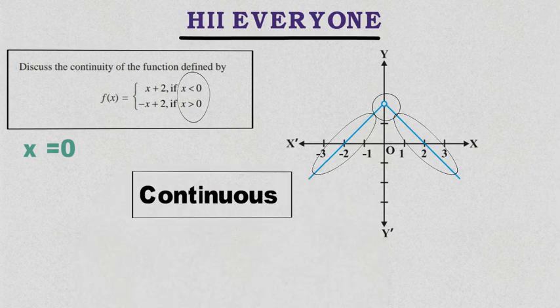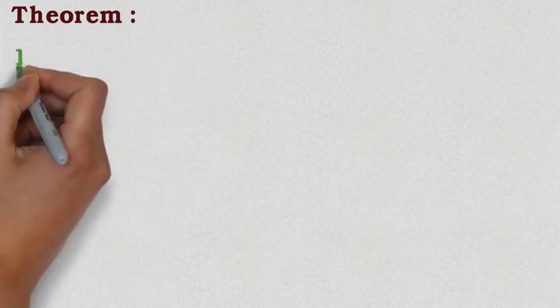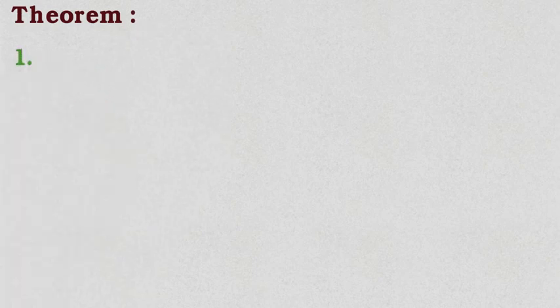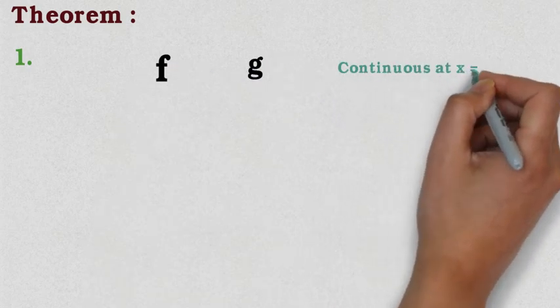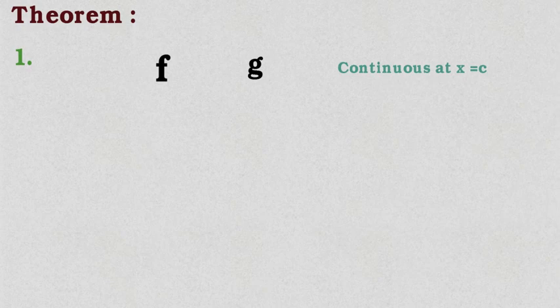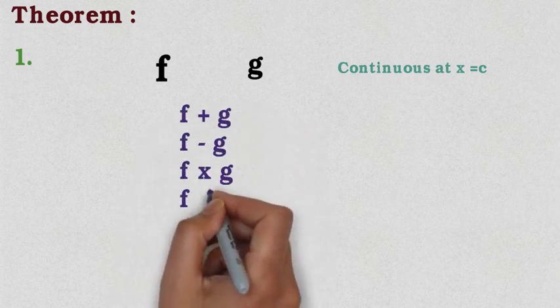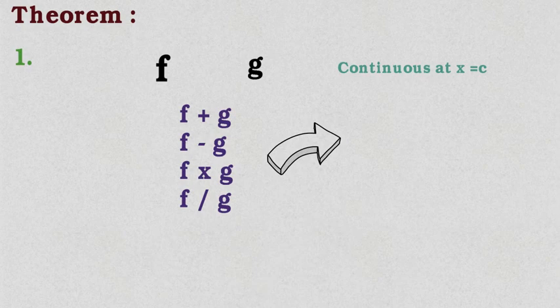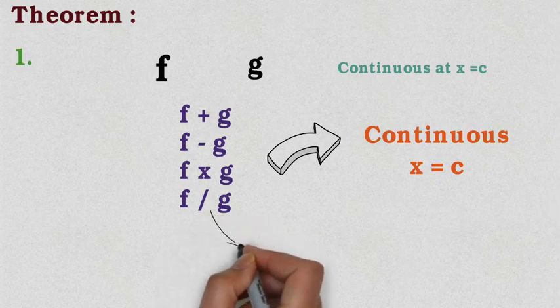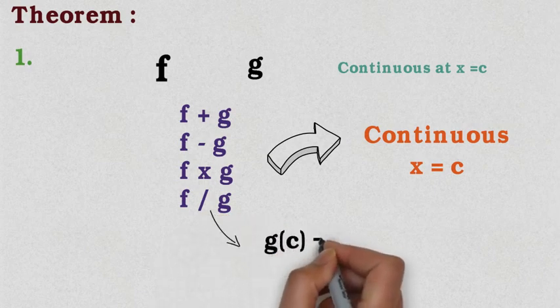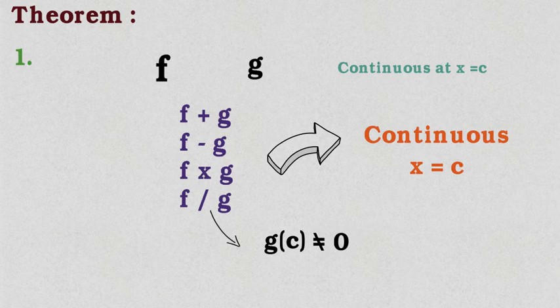Now let's see Theorem 1. Theorem 1 says: suppose two functions f and g are both continuous at x = c. Then f + g, f − g, f · g, and f ÷ g (provided g is not zero) — these four combinations will also be continuous at x = c. The condition that g should not be zero is a common and important condition.